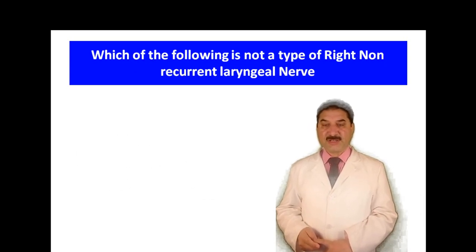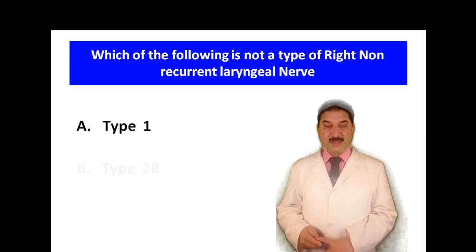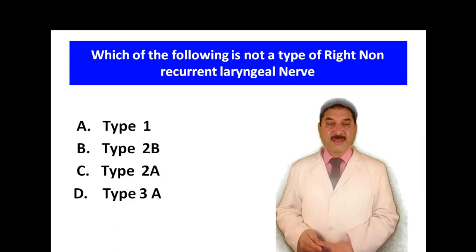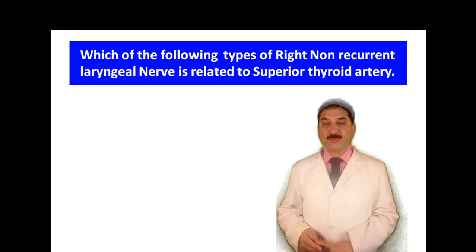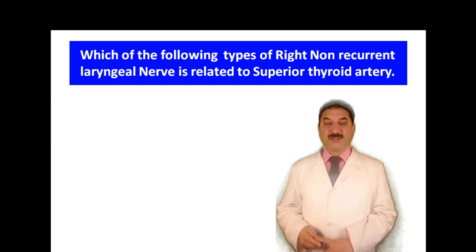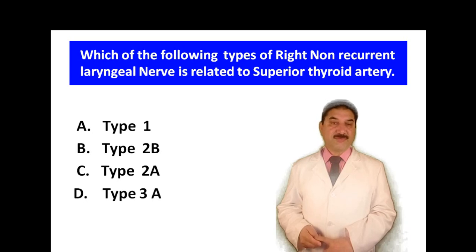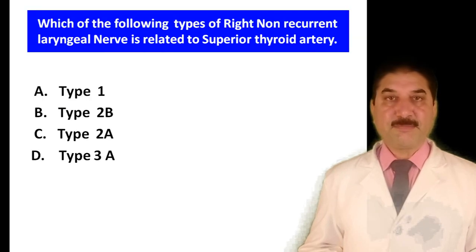Which of the following is NOT a type of the right non-recurrent laryngeal nerve? Type 1, Type 2B, Type 2A, or Type 3A? Type 3A is not described in the literature. Which type of the right non-recurrent laryngeal nerve is related to the superior thyroid artery? Type 1, Type 2B, Type 2A, or Type 3A? It is Type 1, where the right non-recurrent laryngeal nerve arises from the vagus and accompanies the superior thyroid vessels.